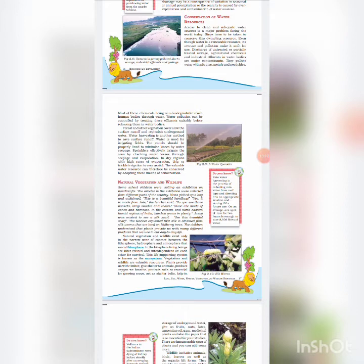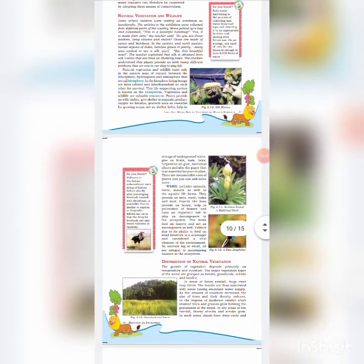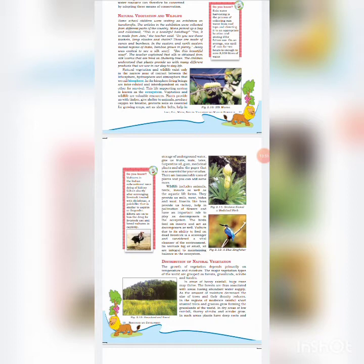Natural vegetation and wildlife exist in the narrow zone of contact between the lithosphere, hydrosphere, and atmosphere that we call the biosphere. In the biosphere, living beings are interrelated and interdependent on each other for survival. This life-supporting system is known as an ecosystem. Wildlife includes animals, birds, insects, as well as aquatic life forms. Birds feed on insects and act as decomposers. Vultures, due to their ability to feed on dead livestock, are scavengers and considered vital cleansers of the environment. All animals, big or small, are integral to maintaining balance in the ecosystem.